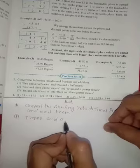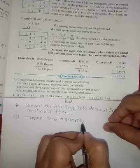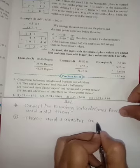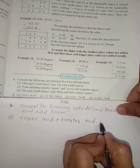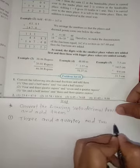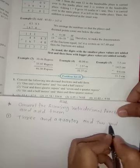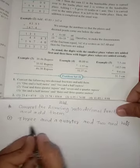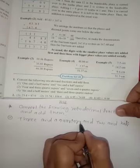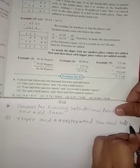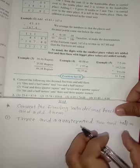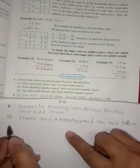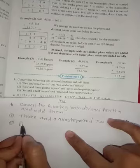Three and a quarter and two and half. Three and a quarter meters and two and half meters—the unit is meters.